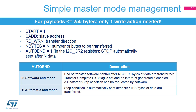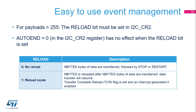After the programmed number of bytes is transferred, the transfer complete (TC) flag is set and an interrupt is generated, if enabled. Then a repeated start or a stop condition can be requested by software. The data transfer can be managed by interrupts or by the DMA. When the payload is greater than 255 bytes, the reload bit must be set in I2C control register 2. In this case, the transfer complete reload (TCR) flag is set after the programmed number of bytes has been transferred. The additional number of bytes to be transferred is programmed when the TCR bit is set, and then the data transfer will resume.